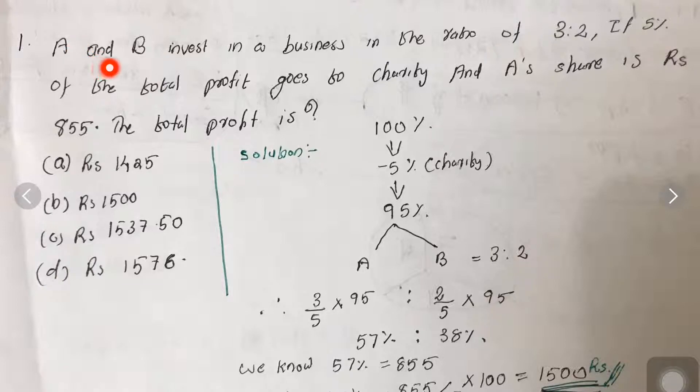The question is: A and B invest in a business in the ratio of 3:2. If 5% of the total profit goes to charity and A's share is Rs.855, then what is the total profit? We have some options here.